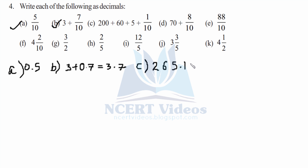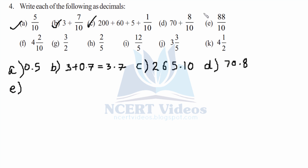Part C: 265 is the whole part plus 0.5, so it gives 265.10 — you may or may not write the trailing zero, your choice. Part D: 70 whole part plus 0.8 gives you 70.8.